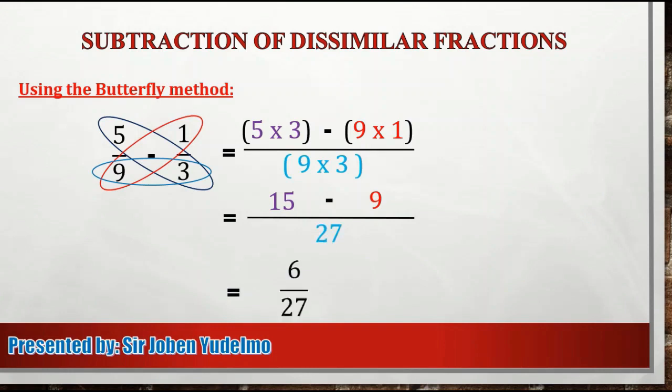Next, 15 minus 9, that's equal to 6. Then, copy their common denominator, which is 27. So 6 and 27 can be reduced to the lowest term by dividing both the numerator and the denominator by their greatest common factor, which is 3. So 6 divided by 3, that's equal to 2, while 27 divided by 3 is equal to 9. Therefore, 5 ninths minus 1 third is equal to 2 ninths.